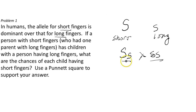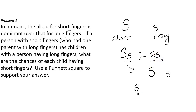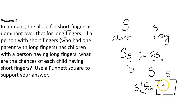This person would have two possibilities: they could have a capital S, which stands for short fingers, and a lowercase s, which stands for long fingers — now represented as separate alleles. But the person with long fingers is only going to have one possible allele; all of their gametes will have the long-fingered allele, the small s. In this Punnett square, we have a heterozygous possibility and a homozygous possibility. One child would have short fingers and the other would have long fingers, so they would have a fifty percent chance of having either one.